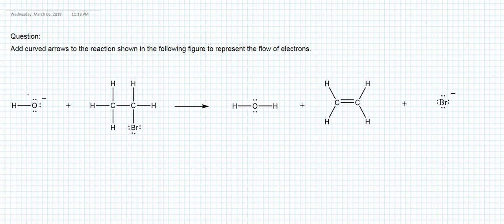To solve this question, we have to see what kinds of bonds are broken and what kinds of bonds are formed. If you look at the reactants, we have hydroxide and bromoethane, and at the end of the reaction we have water, ethylene, and bromide anion.